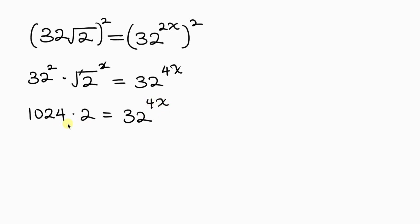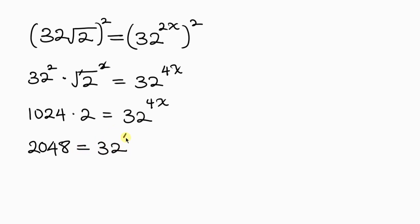Simplifying the left hand side: 1024 times 2 gives 2048. So we have 2048 equal to 32 to the 4x.